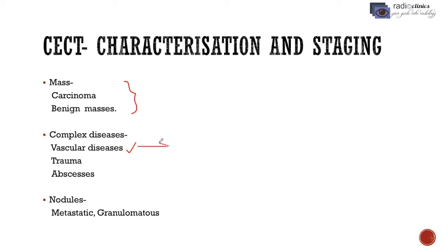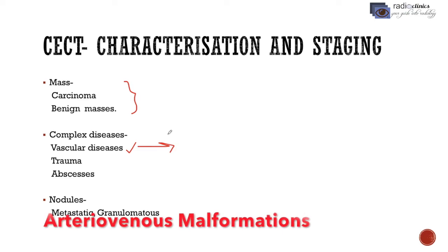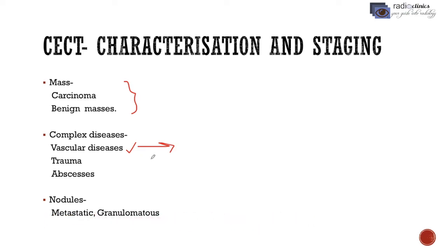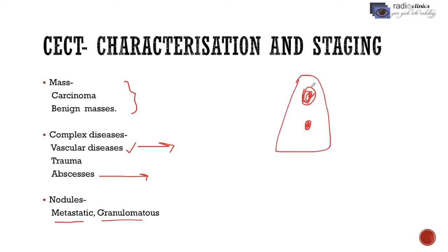Contrast CT can also be done for complex diseases like vascular diseases. Since contrast is given, it can opacify the vessels, so it is helpful in vascular diseases like arteriovenous malformations. It is also valuable in trauma and abscesses, and helpful in differentiating nodules in the lung, whether they are metastatic or granulomatous nodules. This picture sums up what contrast CT is for — it can detect and characterize masses and nodules.